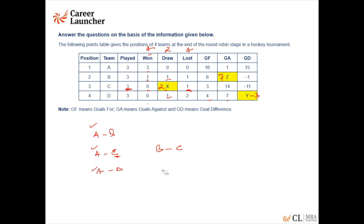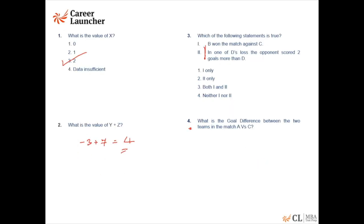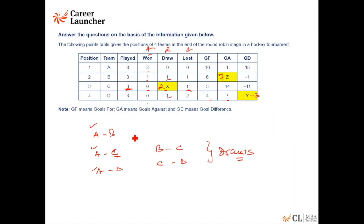That means the remaining 2 matches of C, which is against B and against D, which means both have been drawn matches. These are draws. These are draw matches. Now what does it say? What is the goal difference between the two teams in the match A versus C? Now let's go back to team C. Team C has a goal difference of minus 11. If the matches are drawn, that means for the drawn matches the goal difference should be 0, meaning equal number of goals scored and equal number of goals conceded.